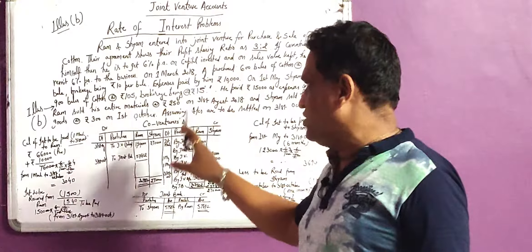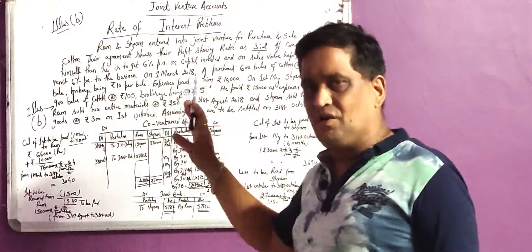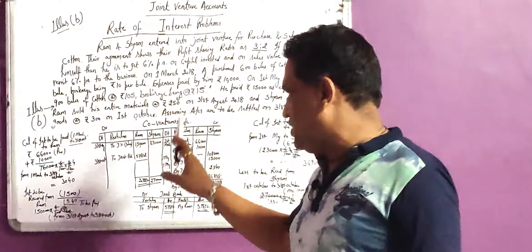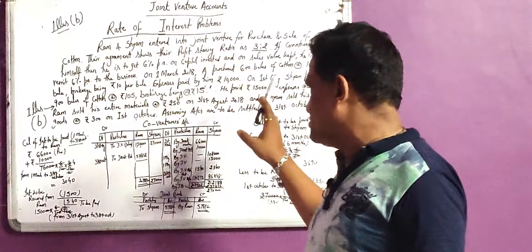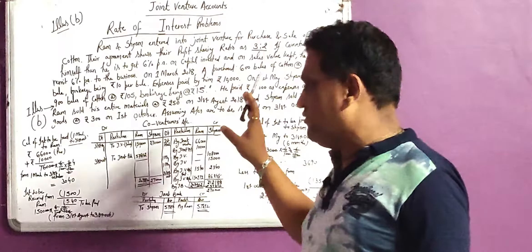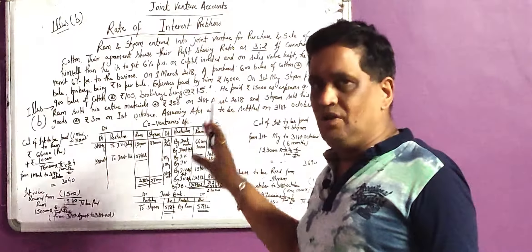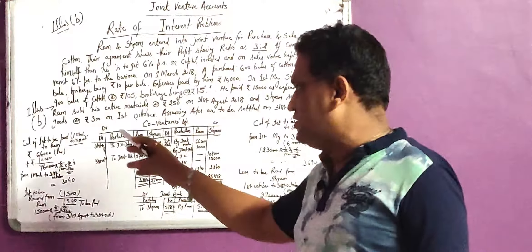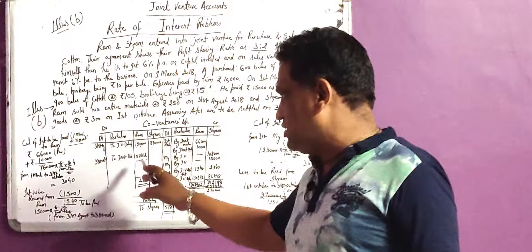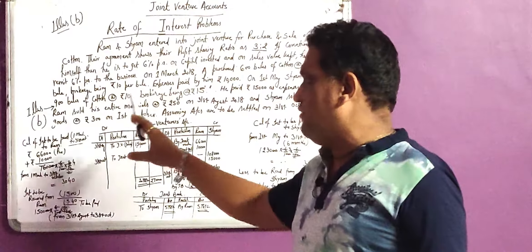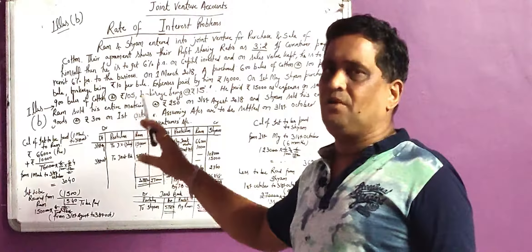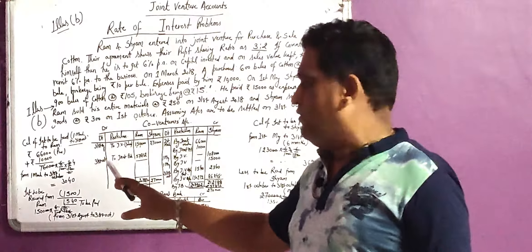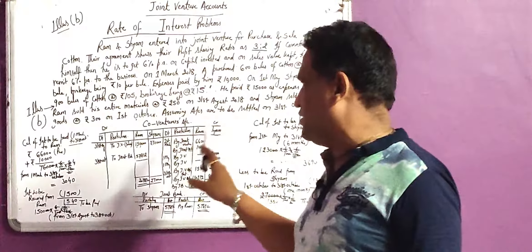Our Ram and Sham have invested capital in their business. Similarly, they have sold their goods and they have kept their money. They invested money and we have provided them interest. We have provided them interest and we have calculated total interest payable and receivable from Ram and Sham respectively.